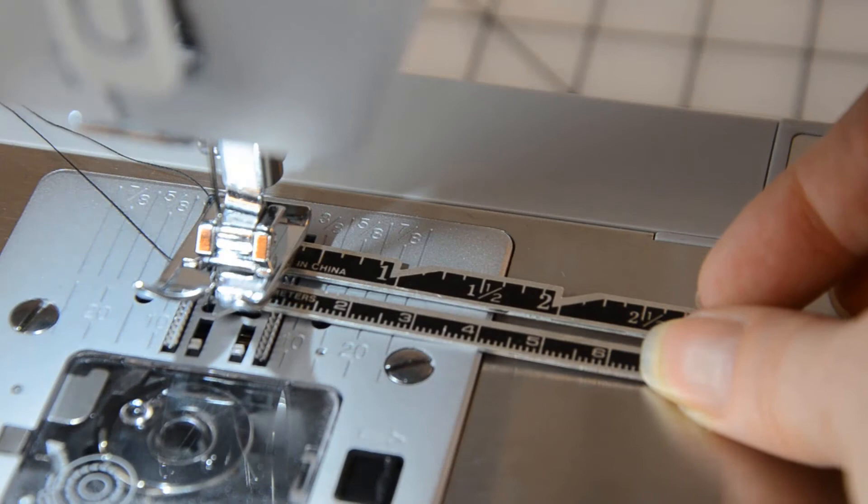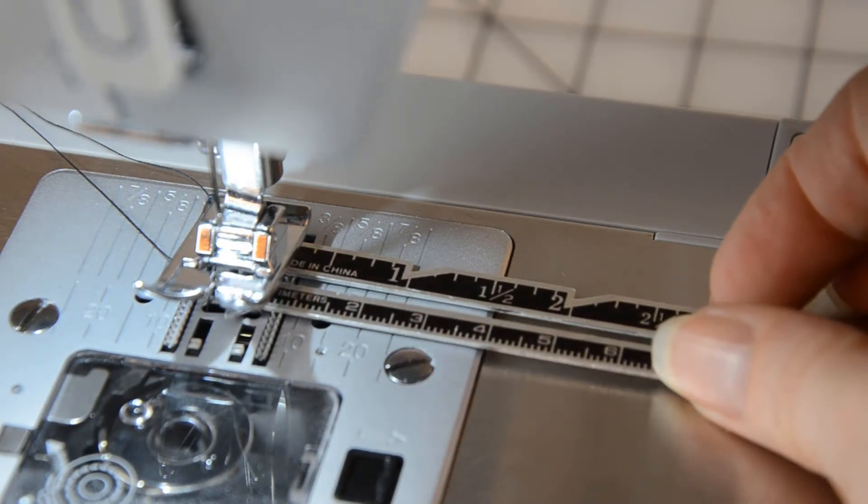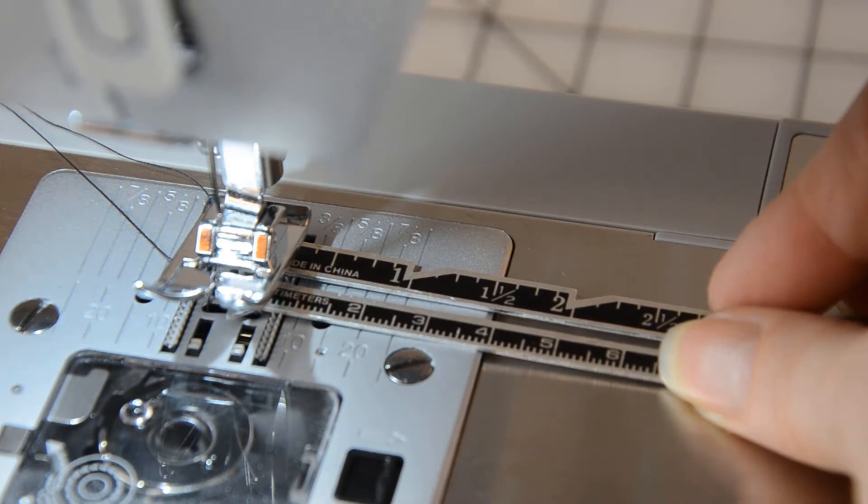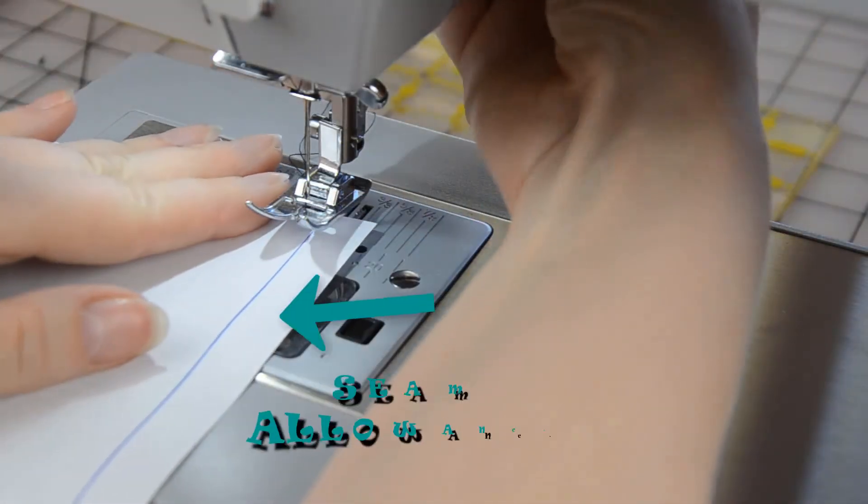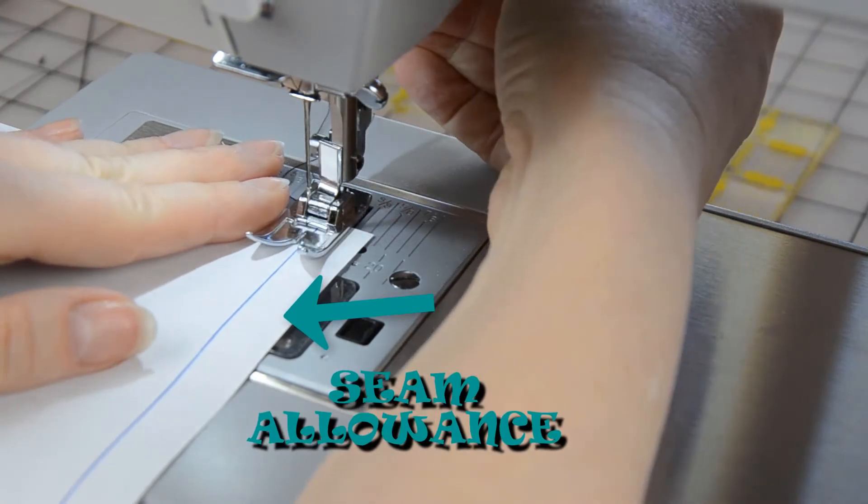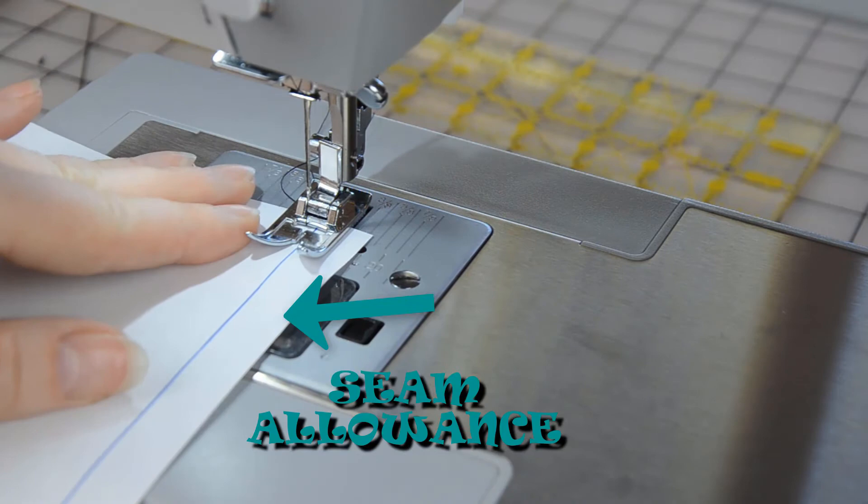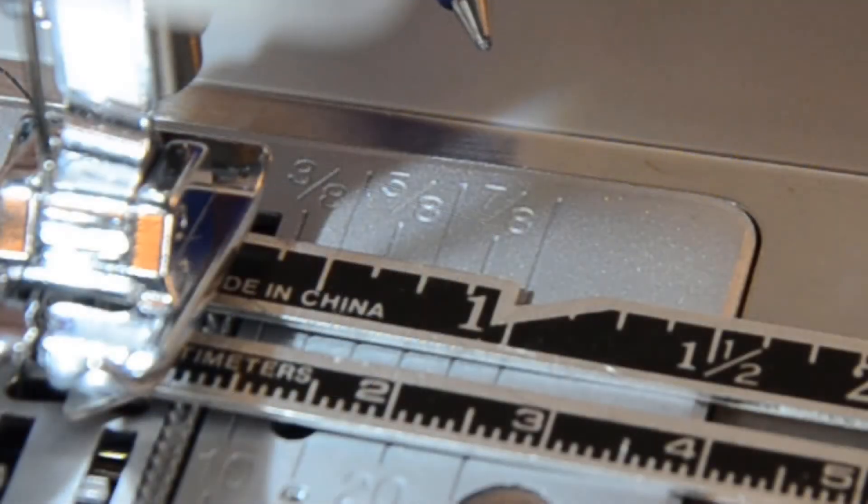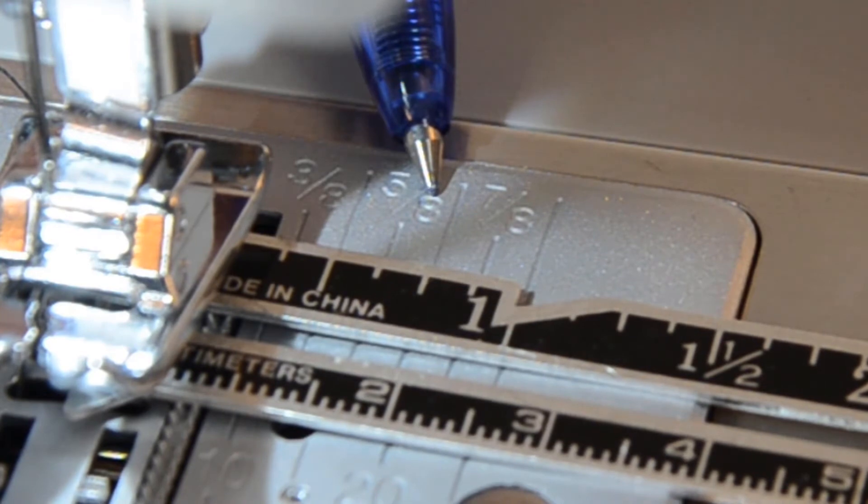Look at the plate under the needle. Notice that it has a number of lines and fractions on it. They are guides so that you can get the exact width of the seam allowance that you want. Seam allowance is the amount of fabric that you leave on the outside edge of your seam. You want to leave enough seam edge so that if your fabric frays, the seam doesn't fall out. Most commercial patterns have you sew using a 5/8th of an inch seam allowance.